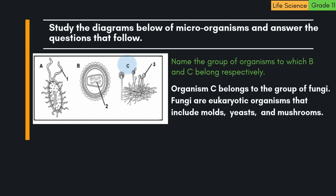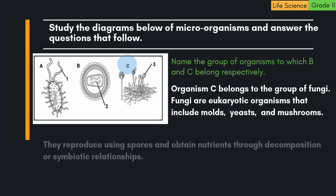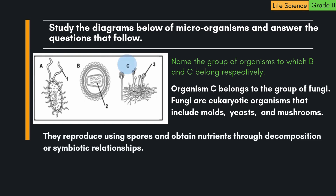Organism C belongs to the group of fungi. Fungi are eukaryotic organisms that include molds, yeasts, and mushrooms. They reproduce using spores and obtain nutrients through decomposition or symbiotic relationships.